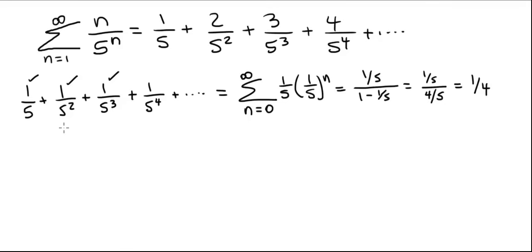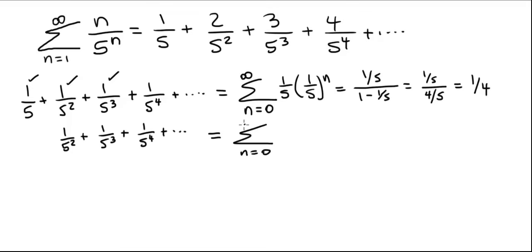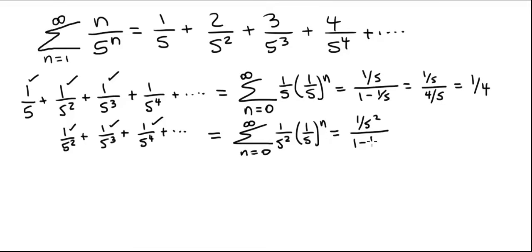The next series starts at 1 over 5 squared plus 1 over 5 cubed plus 1 over 5 to the 4th and so on. We can write it as the summation from 0 to infinity of 1 over 5 squared times 1/5 to the n. When n is 0 we have 1 over 5 squared, when n is 1 we have 1 over 5 cubed, when n is 2 we have 1 over 5 to the 4th. This is also a geometric series in standard form: a is 1 over 5 squared divided by 1 minus 1/5, giving 1 over 5 squared divided by 4 over 5, which equals 1/4 times 1/5.